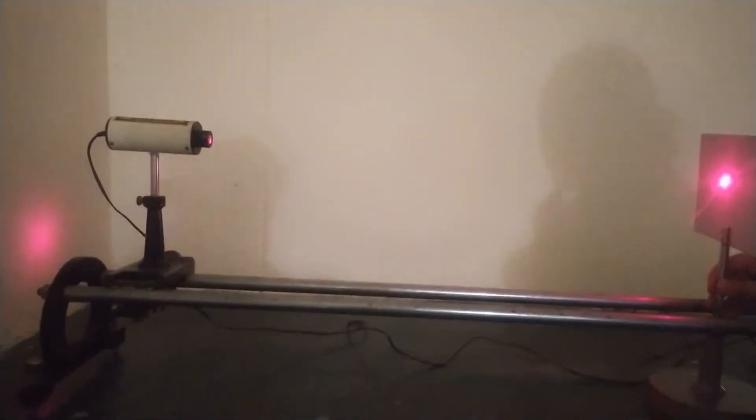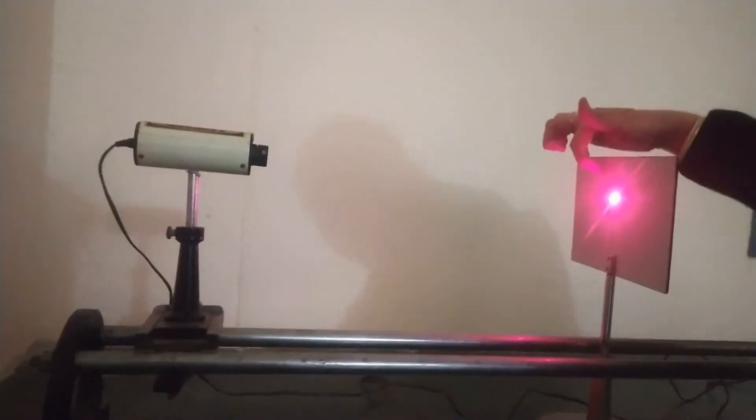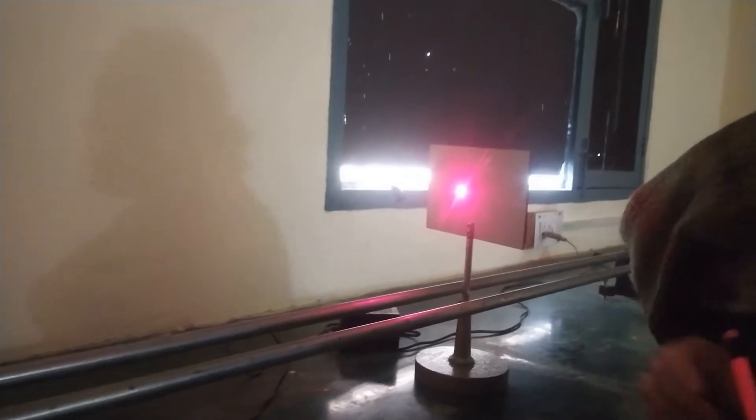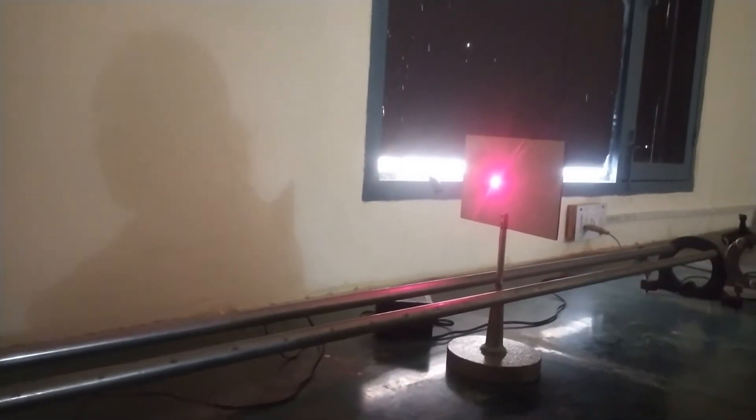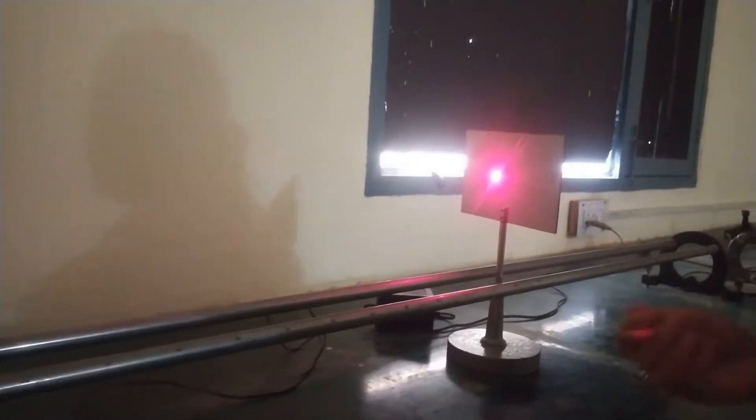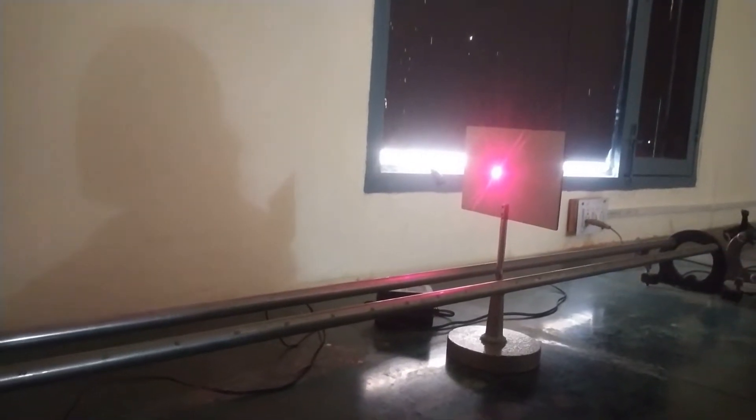To begin with we switch on the laser source, and we observe that it pinpoints on the surface. As we move the screen away, the size of the spot is increasing. This is divergence - the angular spread in the beam with distance. The diameter of the beam increases with distance.